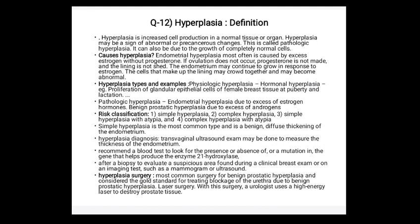Types of hyperplasia: physiological hyperplasia, hormonal hyperplasia such as proliferation of glandular epithelial cells of female breast tissue at puberty or during lactation, and pathological hyperplasia — for example, endometrial hyperplasia due to excess estrogen, or benign prostatic hyperplasia due to excess androgens (male sex hormones). Simple hyperplasia is the most common type and is a diffuse thickening of the endometrium. Diagnosis includes transvaginal ultrasound, blood tests, biopsy, X-ray, and Pap smear.